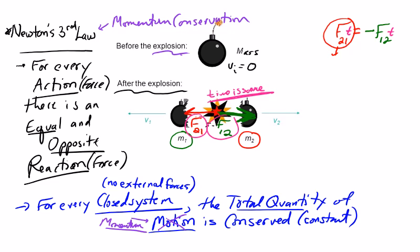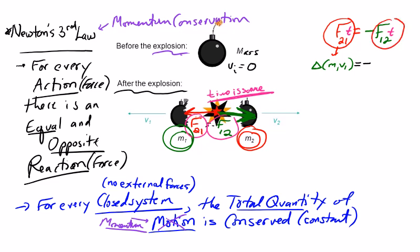Object two is pushing on object one, so this impulse is going to cause a change in momentum of object number one. I'll draw object one in green and object two in red to keep track. Then on the right side, I have the same situation — an impulse acting on object two — so this would be the change in momentum of object number two. I've now converted from forces and action-reaction into momentum, which is what I want.